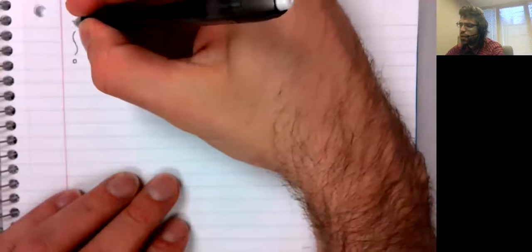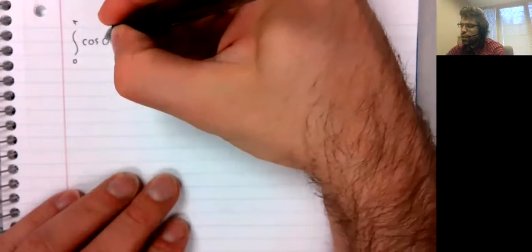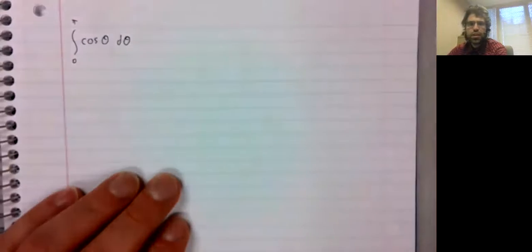In this video, we will deal with that case. And we'll start with an example. Let's compute the definite integral from zero to pi of the cosine of theta d theta.